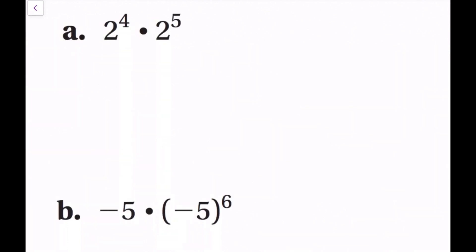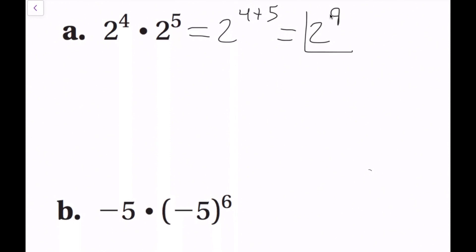For the first example, we simplify two to the fourth power times two to the fifth power. Both have the same base of two, so we add the exponents: two to the four plus five power, which is two to the ninth power. If we want to simplify completely, two to the ninth power equals 512.